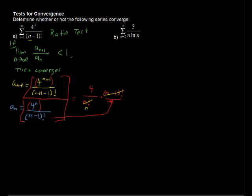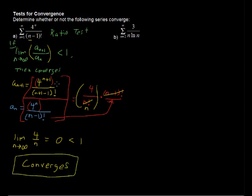So now we take the limit. We've simplified this part and we just get 4 over n. The limit as n approaches infinity of 4 over n equals 0 because the denominator just grows and grows and that is certainly less than 1, so therefore this infinite series converges.